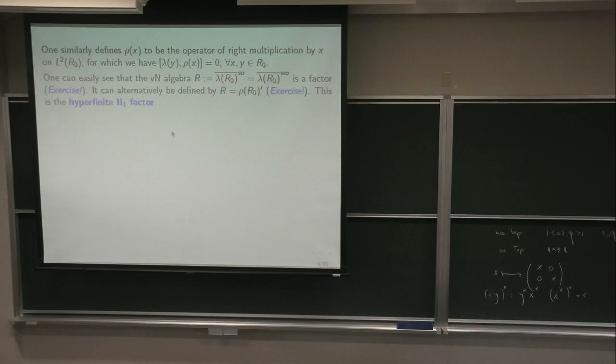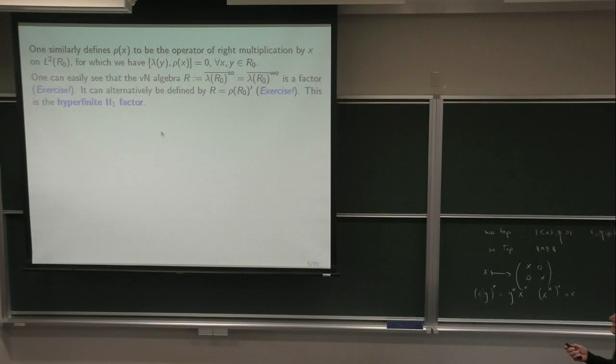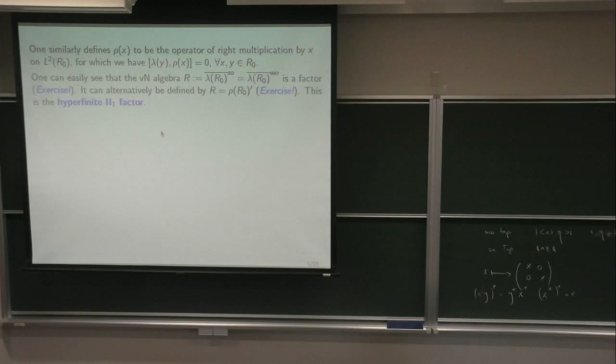So this is the hyperfinite II₁ factor. Now there is this word 'II₁' with the index, which will be justified soon. You can just call it the hyperfinite factor, which would actually be probably very correct. However, we should say 'infinite dimensional hyperfinite factor' or something, because there's a nuance.